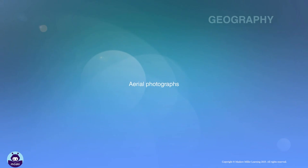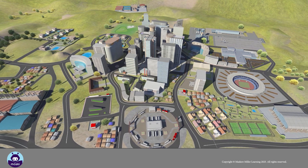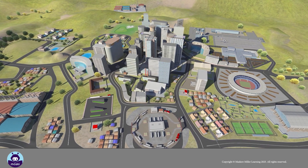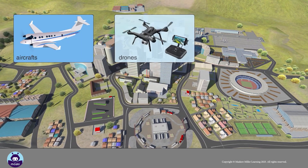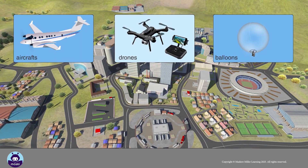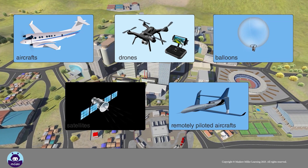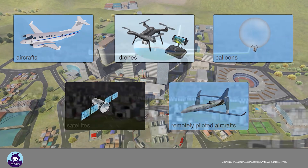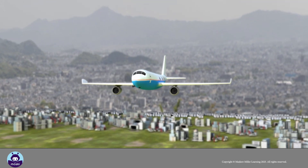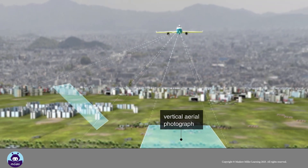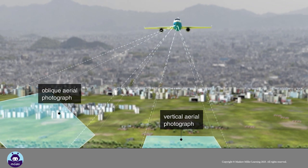Aerial photographs are taken from above by airborne vehicles such as aircrafts, drones, balloons, satellites and remotely piloted aircrafts. There are two types of aerial photographs: vertical aerial photographs and oblique aerial photographs.